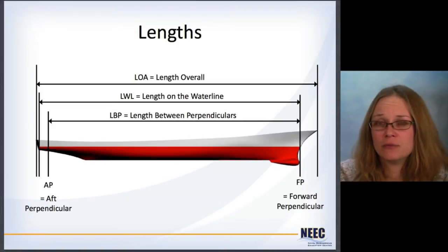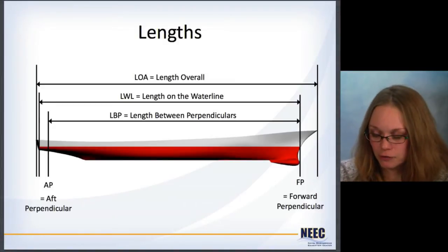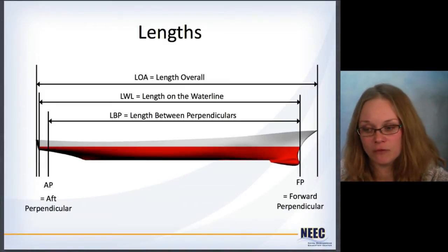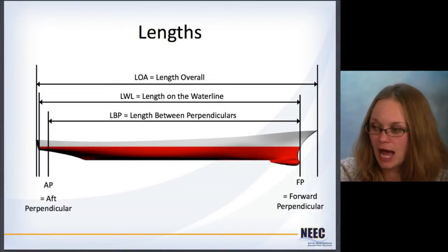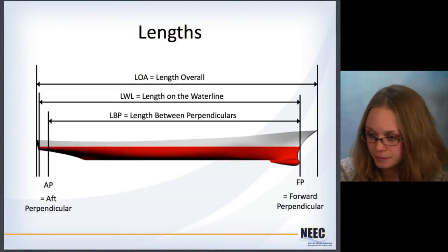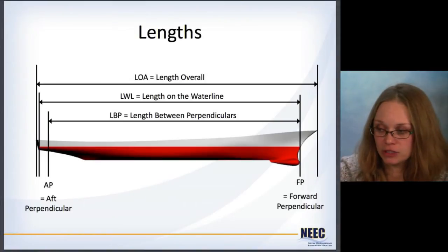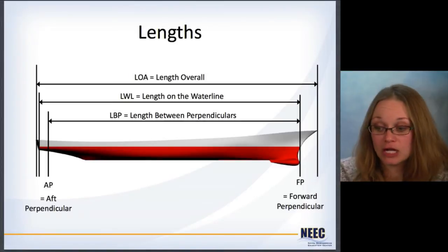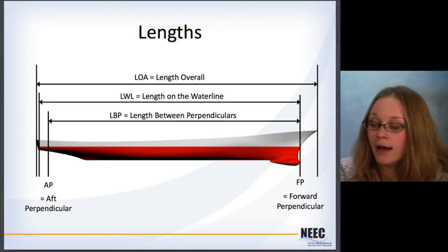There are several different lengths we use when talking about ships. There's an overall length, which is very important when looking at how much dock length you need. But when looking at how the ship is going to behave in the water, you often don't really care about the part above the water — you're looking at the part of the hull that's underneath the water. So we talk about the length on the waterline, which is how much of the ship actually corresponds to being inside the water. There are also a couple of perpendiculars — vertical lines. The forward perpendicular is often placed where the bow intersects the waterline. The aft perpendicular can be placed at a similar location, or at where the rudder goes, or where the propeller shaft comes out. Then you have the length between perpendiculars — the length between wherever those two perpendiculars are defined.